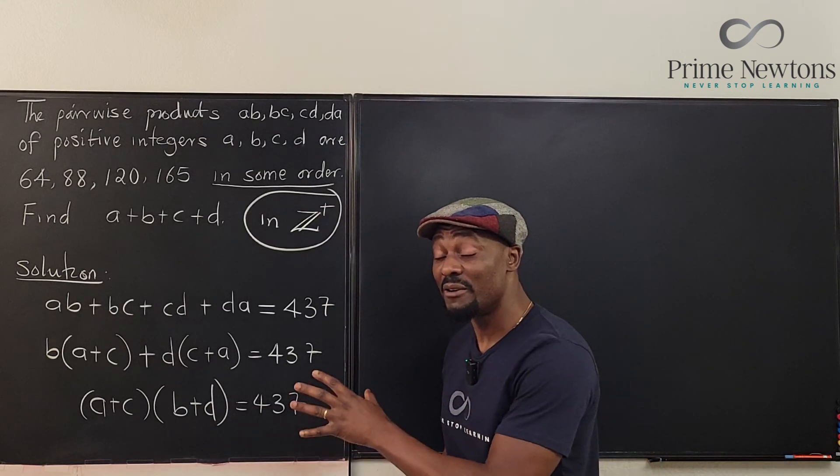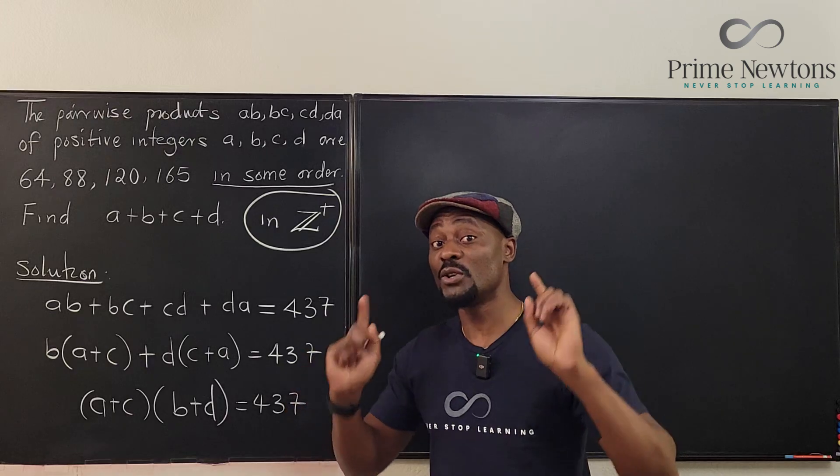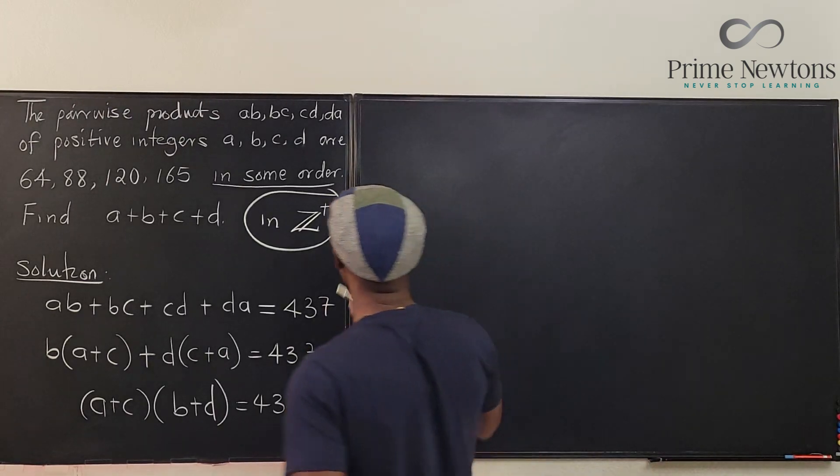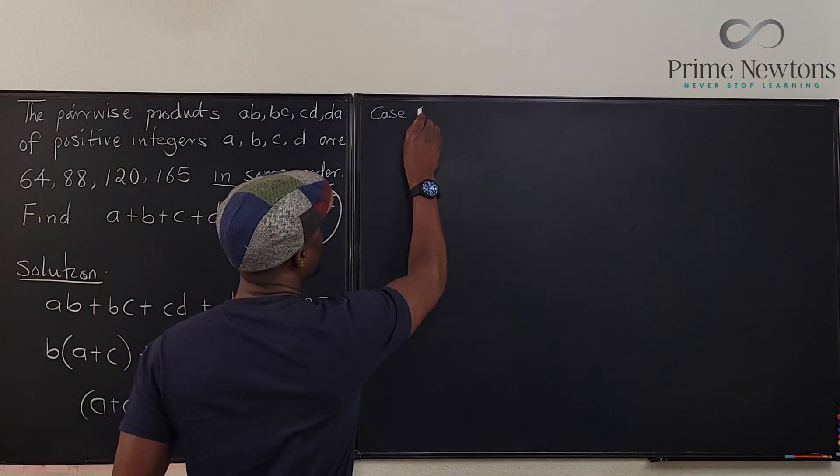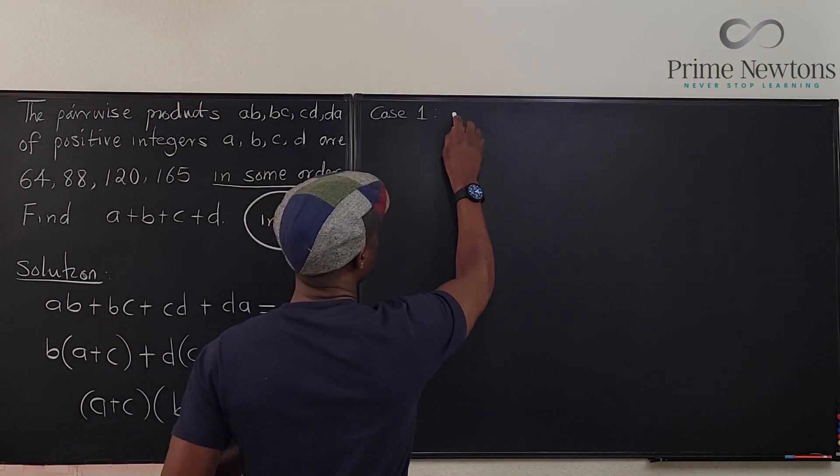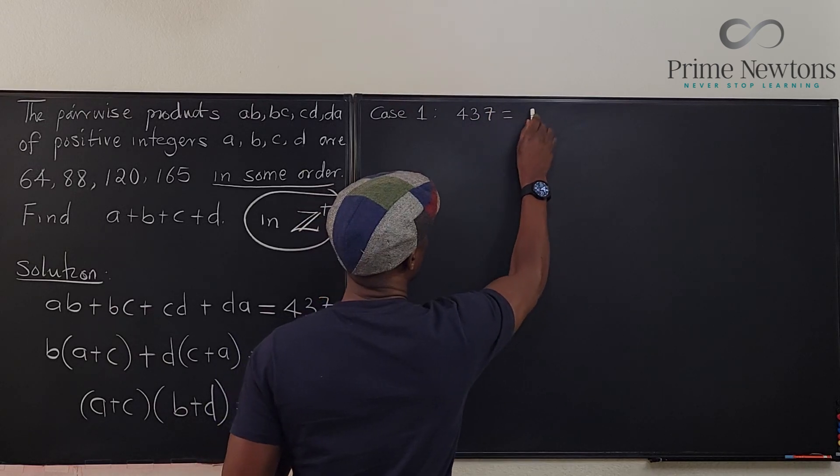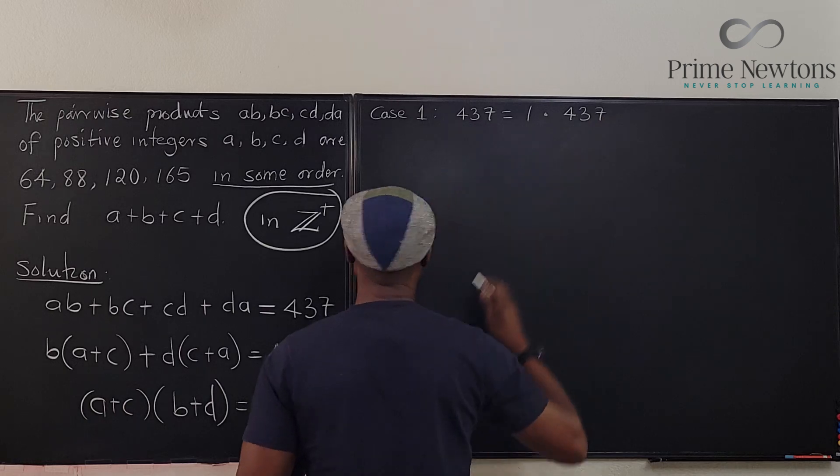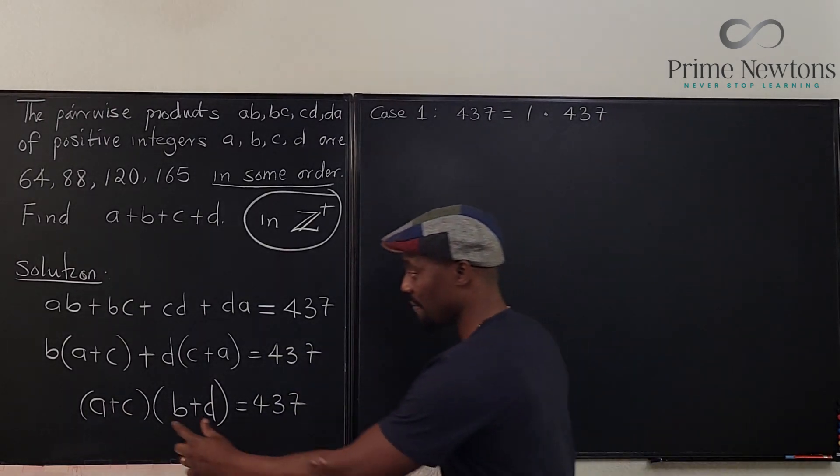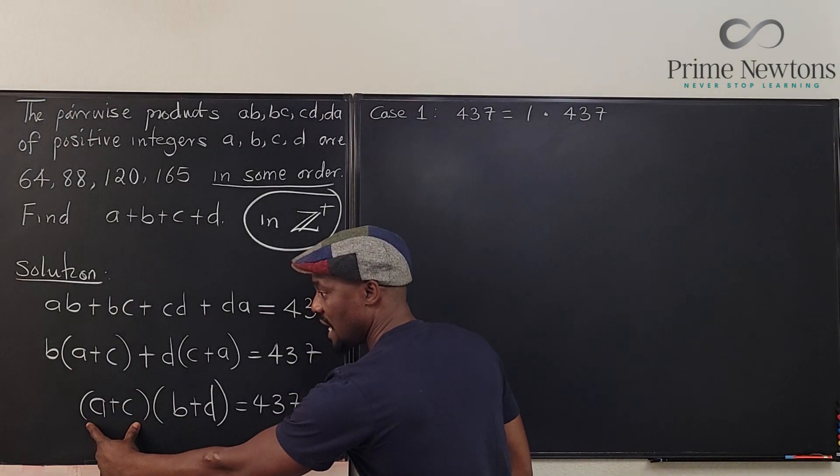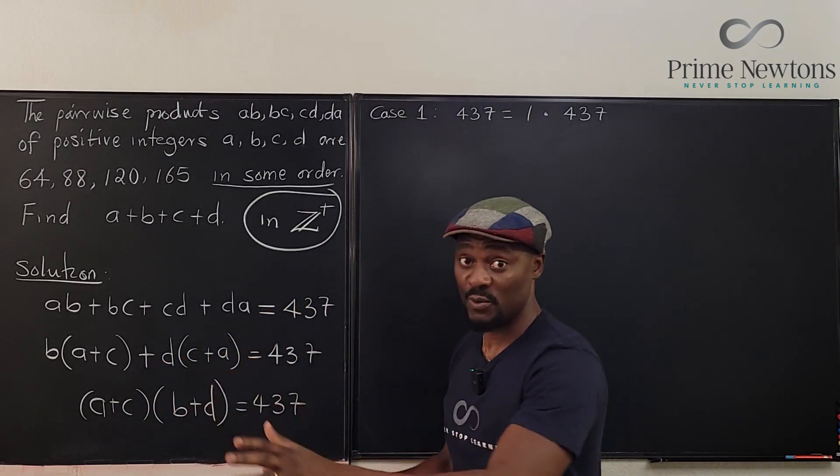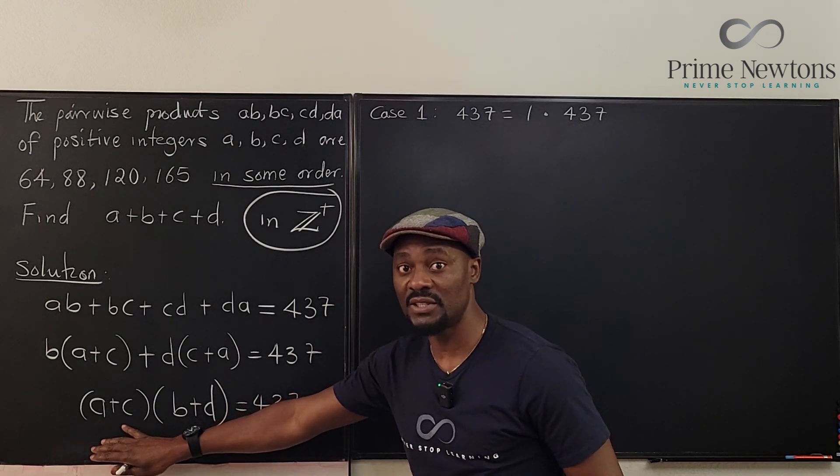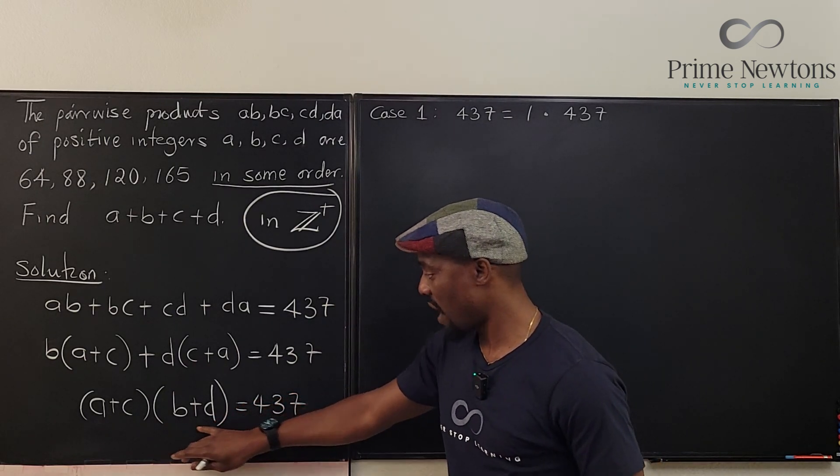That's where the biggest work is. The first option you must always consider is 1 times 437. So case 1, you have 437 equals 1 times 437. If we have this case, it means that one of these, A plus C, has to be equal to 1, or this one. Without loss of generality, let's just say that the one on the left is equal to 1, the one on the right is 437.